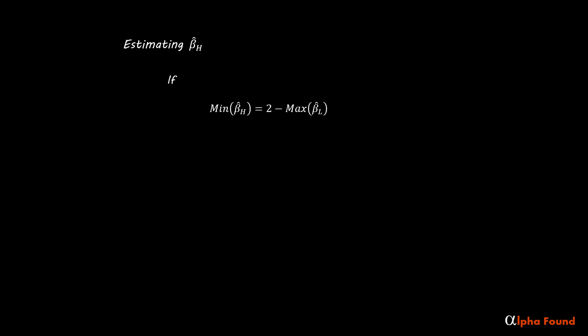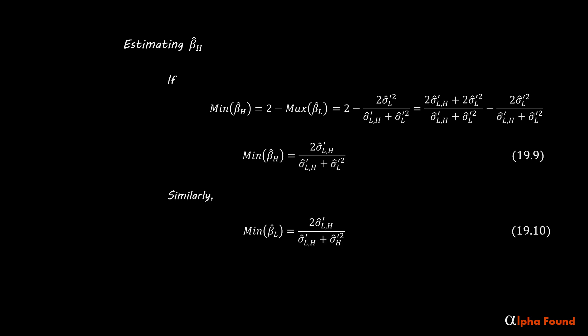If the minimum estimate for the high ideal beta equals two minus the maximum estimate for the low ideal beta, then similarly the relationship holds.